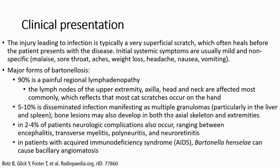Particularly in the liver and spleen, bone involvement may also develop with osteoskeletal and extremity involvement. In a small percent of patients, neurological complications also occur, ranging from encephalitis, transverse myelitis, polyneuritis, and neuroretinitis. In patients with acquired immune deficiency syndrome, Bartonella henselae can cause bacillary angiomatosis.